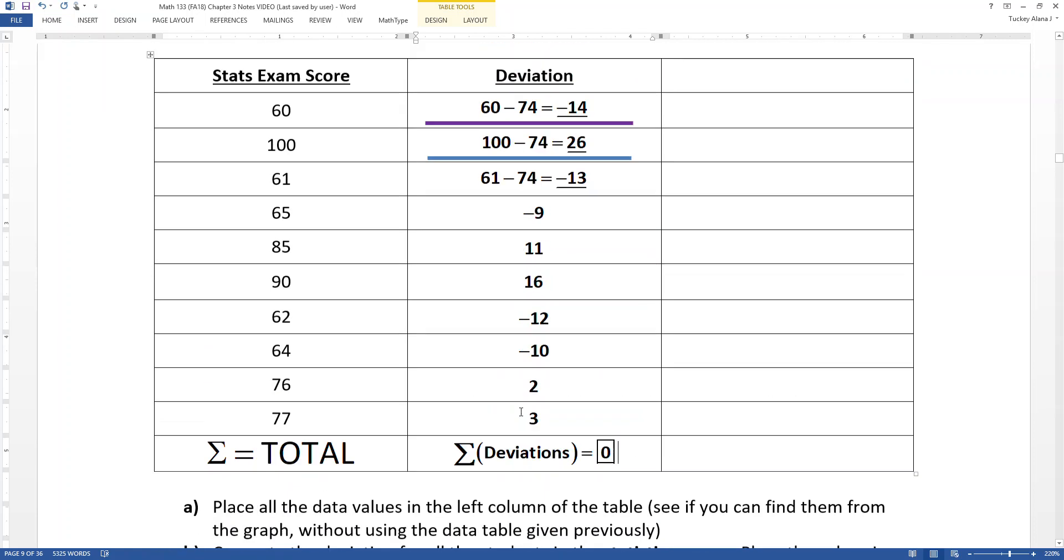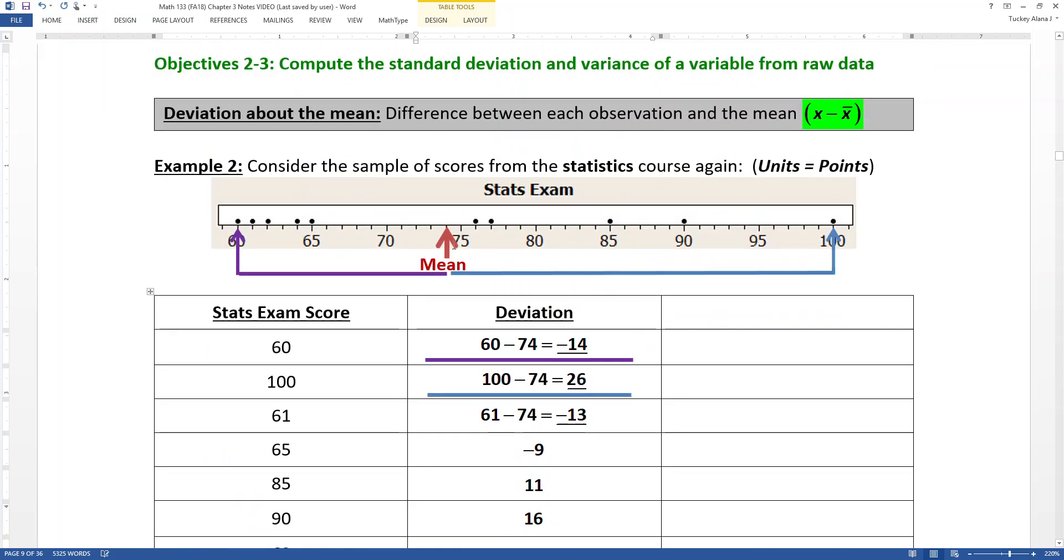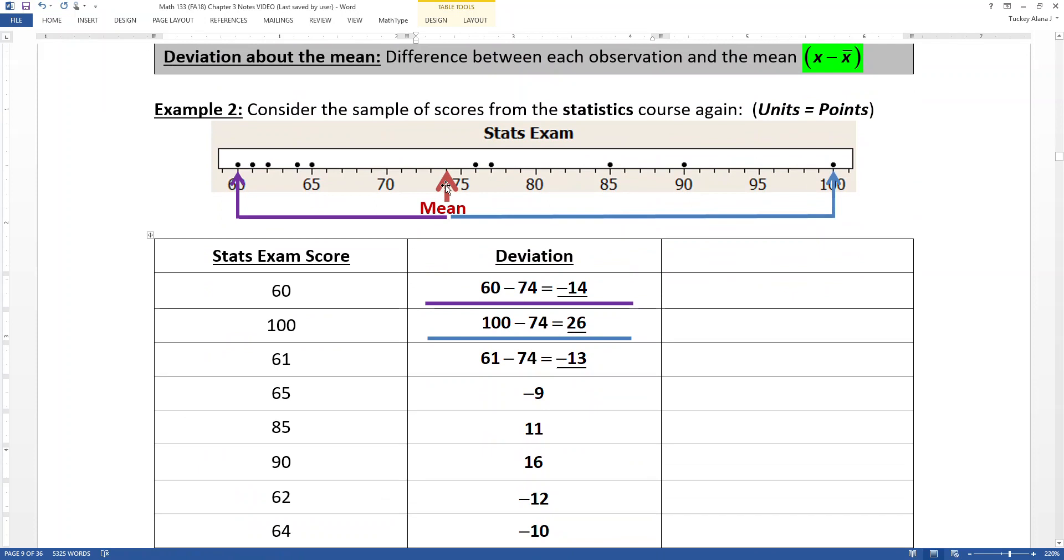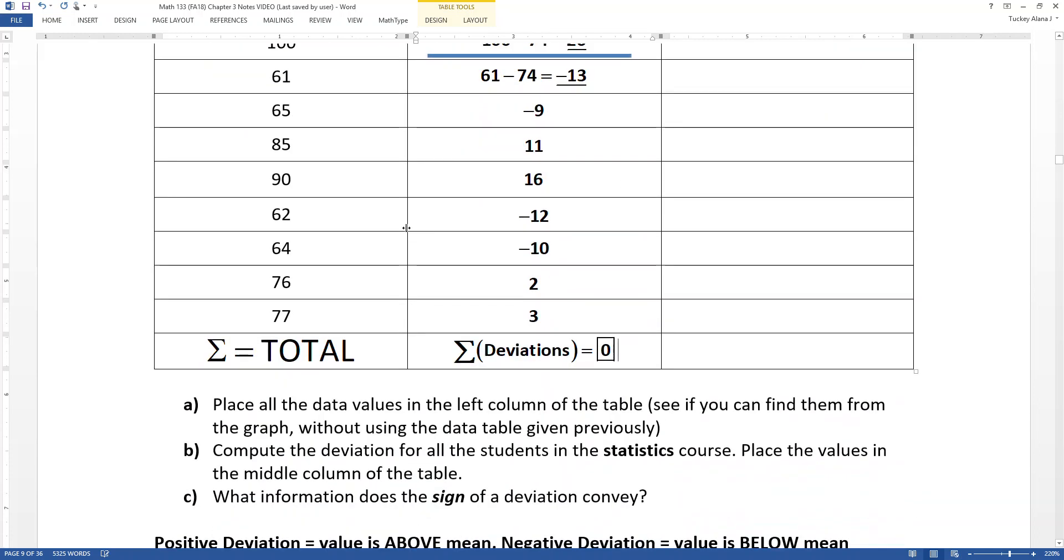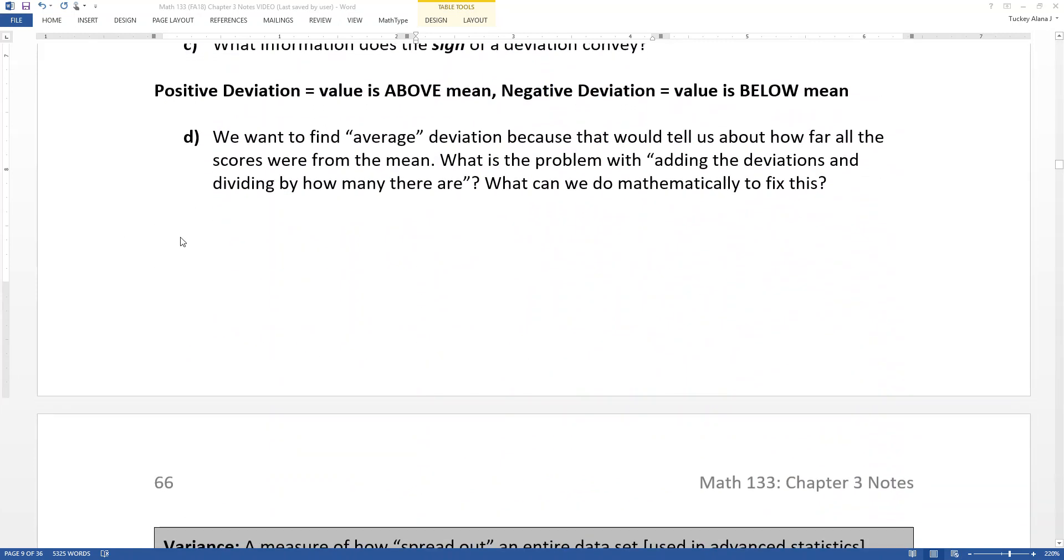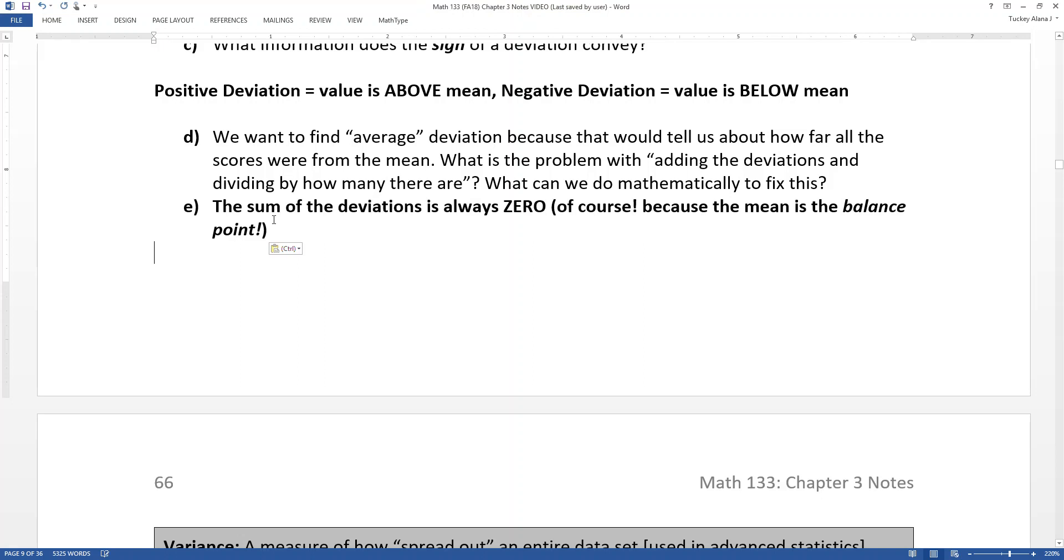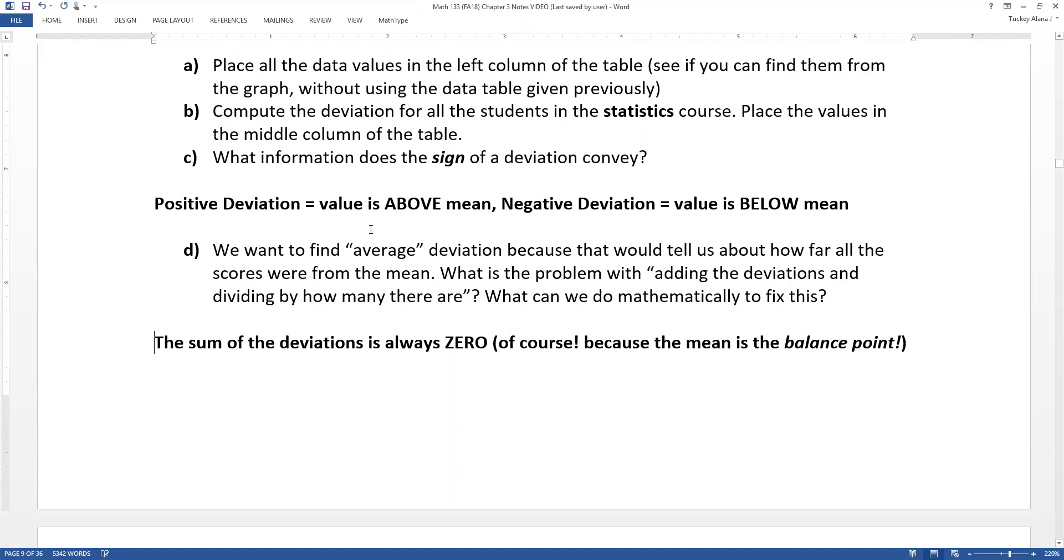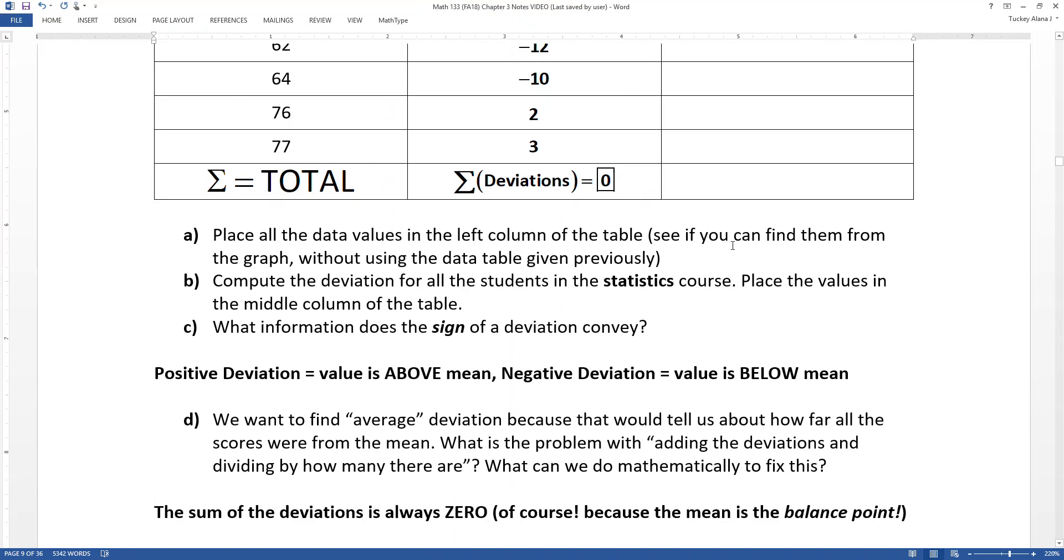And that makes sense. Think about this for a second. The red line, the mean, is the balance point. So by definition, don't the negatives and the positives balance each other? That's actually what we meant back in section 3.1 when we said that the mean was the balance point. It means that when you add up the negative deviations and the positive deviations you're going to have zero. So the sum of the deviations is actually always zero. Of course. Because that's what it meant to be a balance point in the first place.